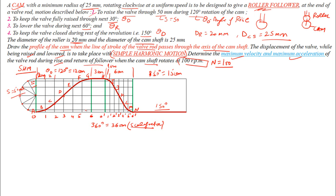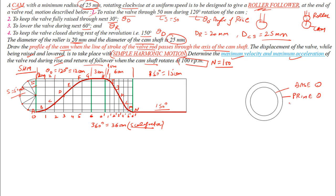Now start the cam profile diagram. The radius of the cam base circle is 25 mm. Draw the base circle, then the prime circle. The prime circle radius = base circle radius + half the roller diameter = 25 + (20/2) = 25 + 10 = 35 mm.